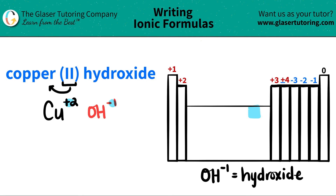Since we have the two charges, we're going to crisscross them to figure out how many of the other we need. So this plus 2 is going to crisscross down, telling me that I need 2 of the whole hydroxides. And this 1 is going to crisscross down, telling me that I only need 1 copper. When you crisscross down, the charges kind of vanish — it's just like counting numbers.